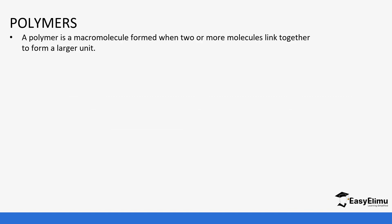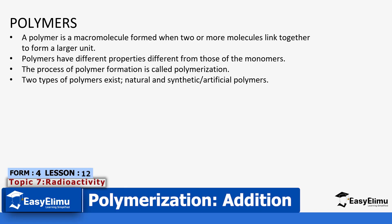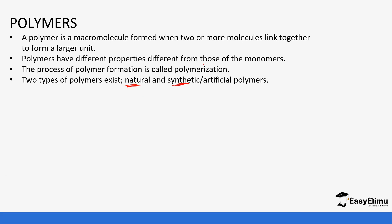A polymer is a macromolecule formed when two or more molecules link together to form a larger unit. We mentioned polymers when we were discussing alkenes, so we can go back and check what we discussed there — we did a few calculations as well. Polymers have different properties from those of monomers. The process of polymer formation is called polymerization, and there are two types of polymers: natural ones and synthetic or artificial ones.